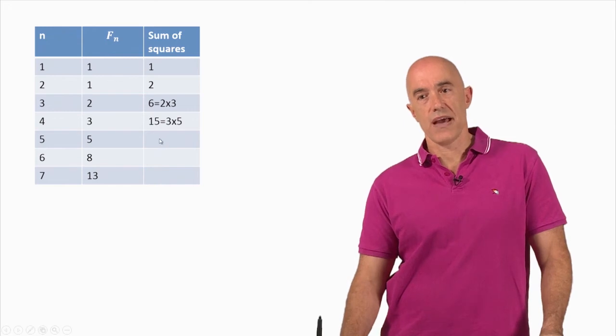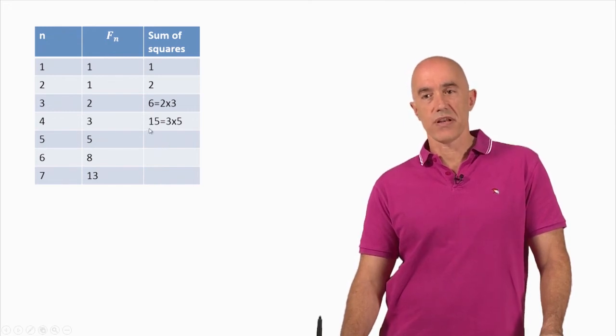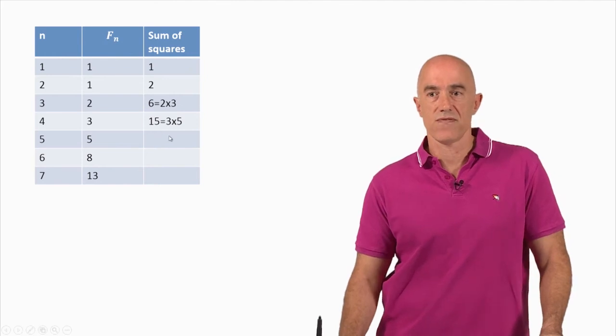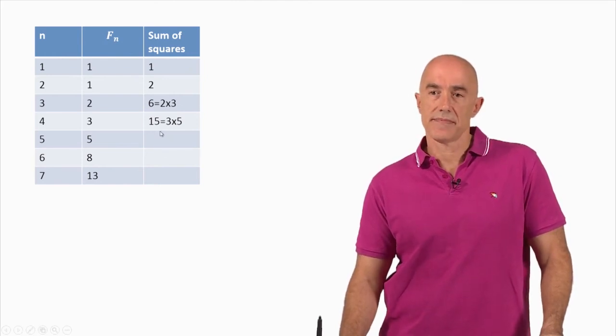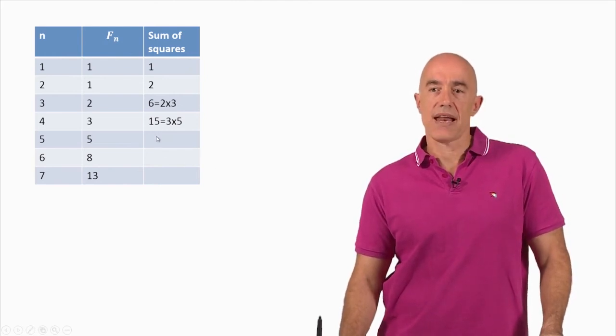The next one, we have to add 5 squared, which is 25, so 25 plus 15 is 40. Before we do that, actually, we already have an idea, 2 times 3, 3 times 5.